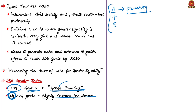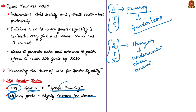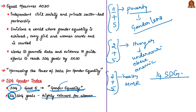A gender lens needs to be applied with every SDG goal. Under SDG goal 2 on hunger and nutrition, we should see how many female children are affected by undernourishment, how many women are obese, how many women are anemic. Under SDG goal 3 on health, we can link maternal mortality rate. Almost 14 sustainable development goals have high relevance to women and female children.